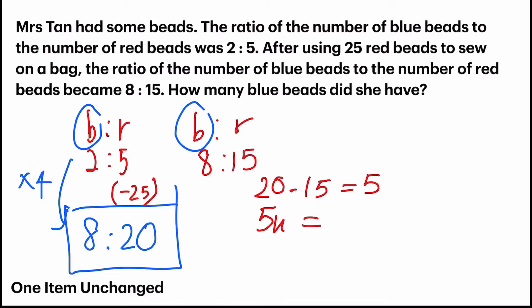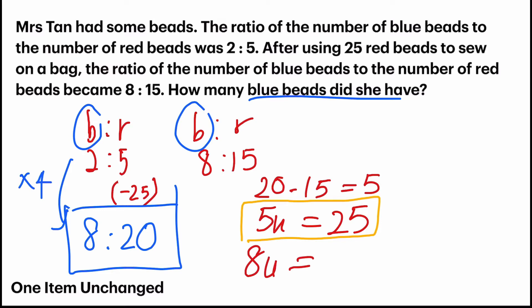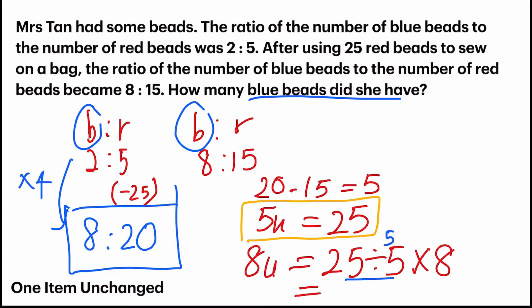Those 5 units of beads were used, which refers to the 25 beads that were used. So now with this crucial information — 5 units equals 25 — I can solve the question. How many blue beads did she have? Blue beads are 8 units. To find 8 units, I take 25 divided by 5, which gives me 1 unit equals 5. Then I multiply by 8. So 5 times 8 gives me 40. That's my final answer.